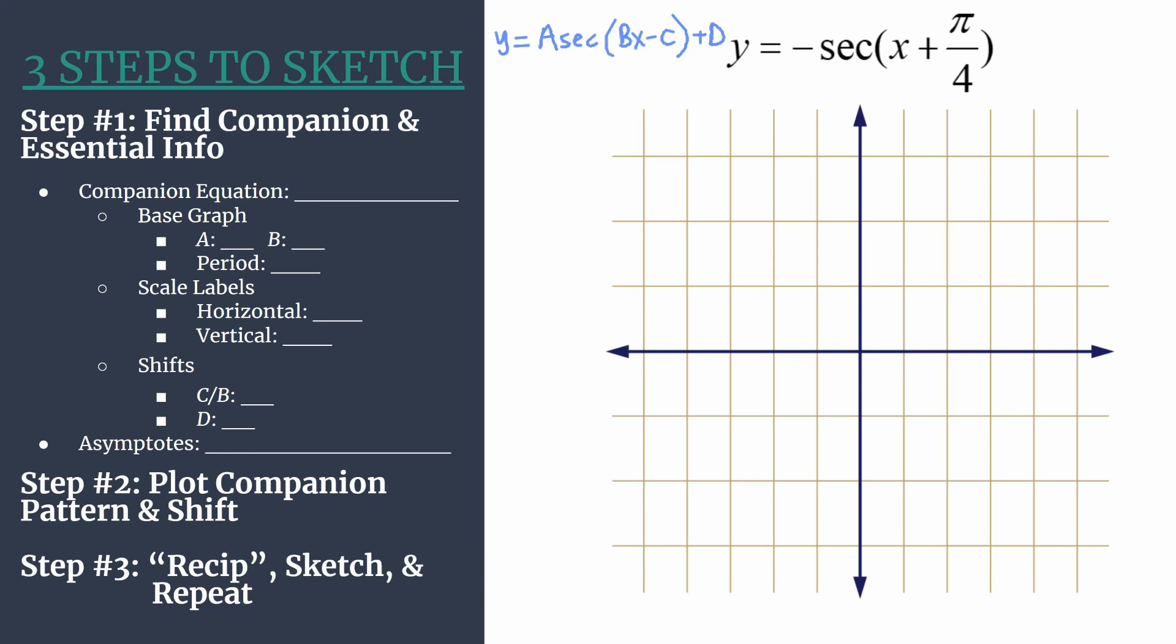I do like to note the general form has this bx minus c, and our equation has a plus sign there. So if you want to rewrite this as x minus negative pi over 4, I think then you can more clearly see that your c term is actually negative pi over 4. So that's a quick tip just to avoid any sign or shifting error.